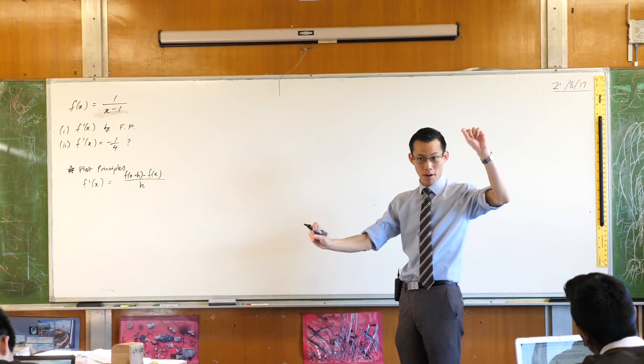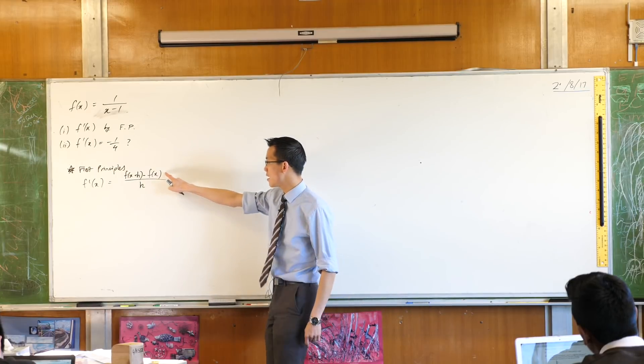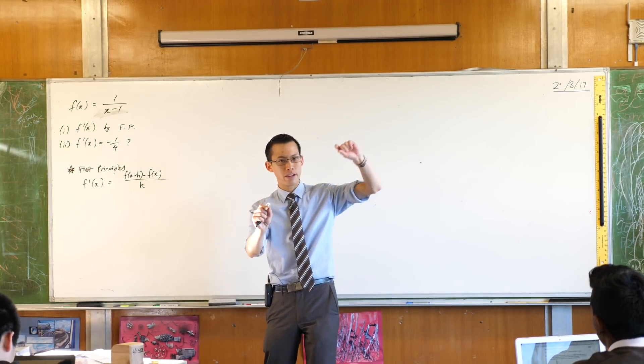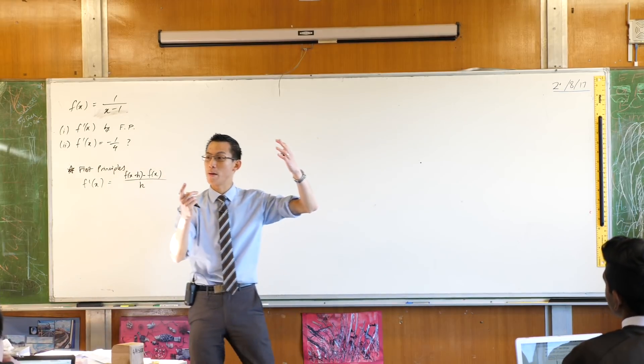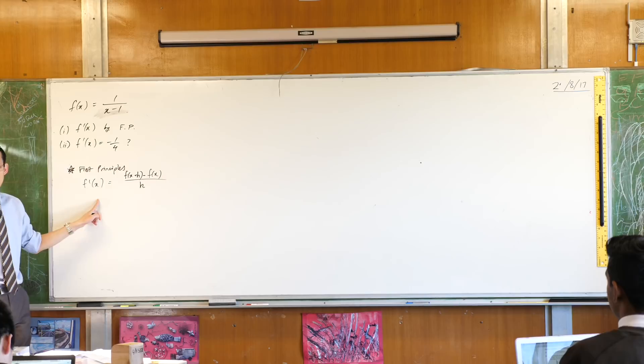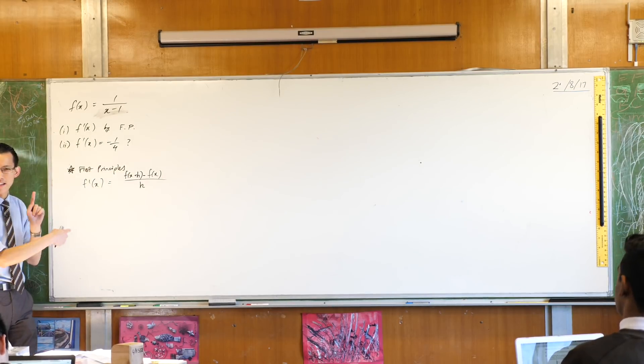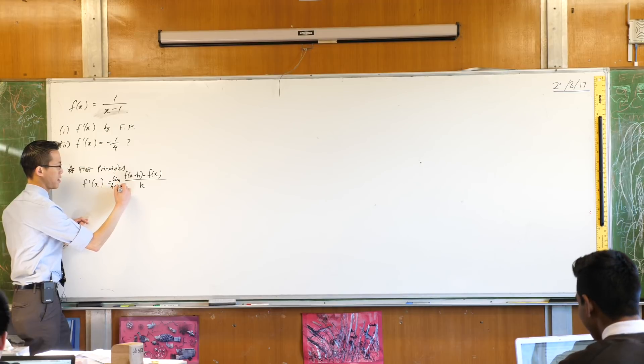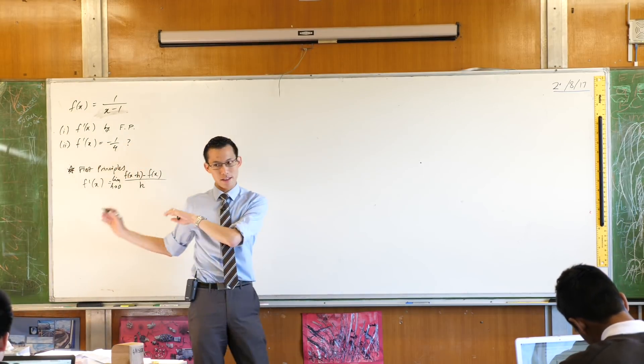Now this is almost first principles, it's missing something. This is gradient between two points, y2 minus y1, and this is what you would get from x2 minus x1, but I don't actually want the gradient between two points, that would just give me a secant. First principles gives me something better than that, it gives me the gradient of a tangent. So what do I have to add to this? The limit, very good. So never been assessed on this before, so that's why this is a big deal.